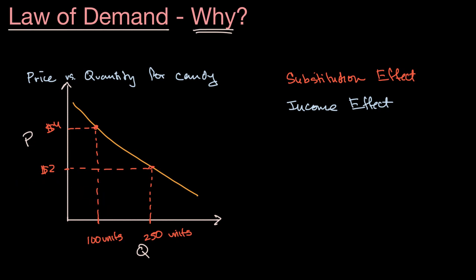Now the last dimension that economists will often talk about for why the law of demand is downward sloping like this, and we talk about this in other videos, is this idea of decreasing marginal utility.